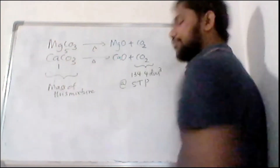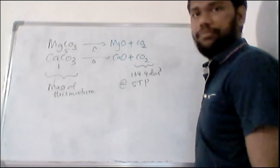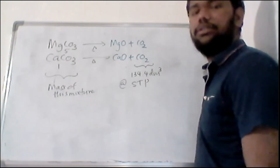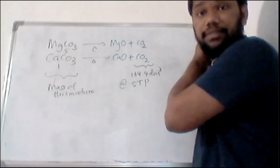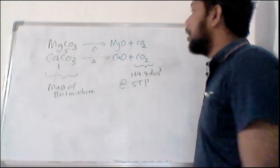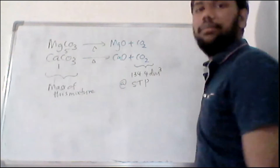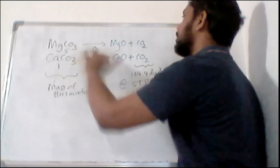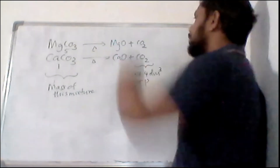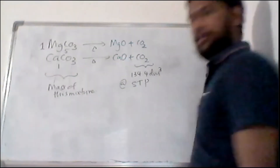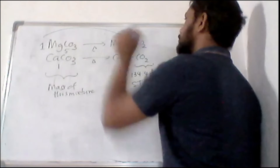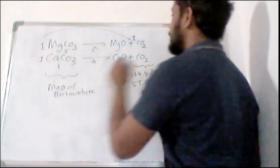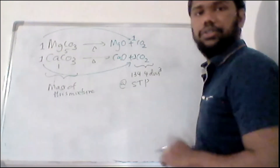The first thing you need to do in this type of question is balance the reaction. For magnesium carbonate decomposition, there is no problem balancing because calcium has three oxygens and one carbon. The key point is: when you have one mole of magnesium carbonate, you get one mole of CO₂ according to the balanced equation. Similarly, one mole of calcium carbonate gives one mole of CO₂ — the stoichiometry is the same.